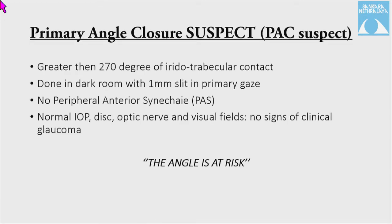Primary angle closure suspect is defined by more than 270 degrees of iridotrabecular contact on gonioscopy done in a dark room with a 1 mm slit in primary gaze, with no peripheral anterior synechia, and normal intraocular pressure with no optic disc or visual field signs of clinical glaucoma. At this stage, the angle is at risk.